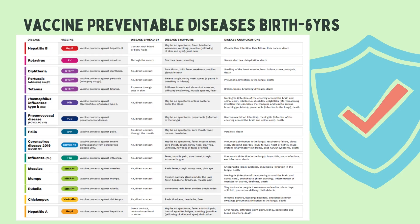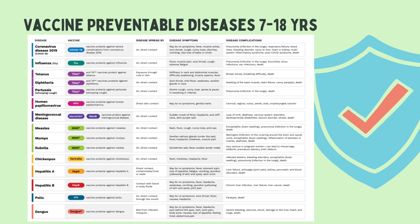This is a vaccine preventable diseases chart by the American Academy of Pediatrics and the CDC. You'll see the list of vaccine preventable diseases — hepatitis B, hepatitis A, rotavirus, diphtheria, pertussis, tetanus, etc. — the vaccine that protects against each disease, how the disease is spread, disease symptoms, and disease complications. For children ages 7 to 18, a different chart is used, which adds HPV, meningococcal disease, and dengue fever.